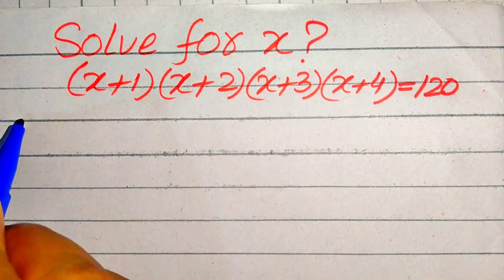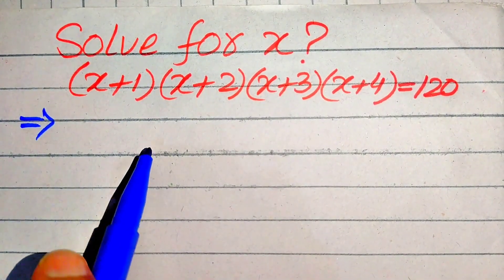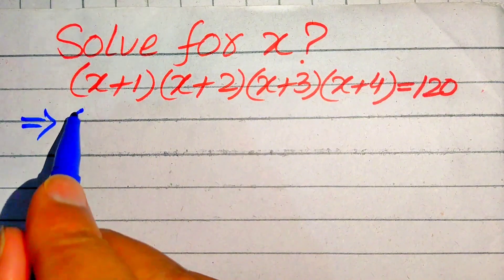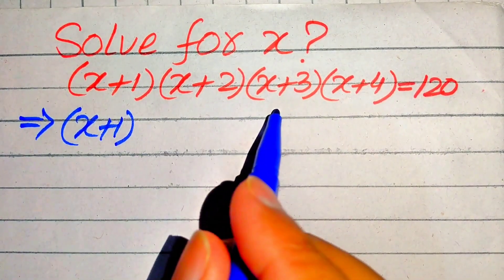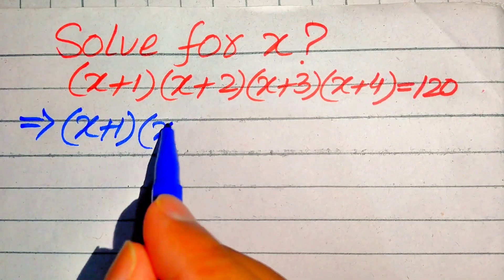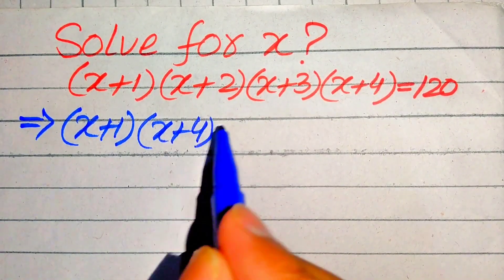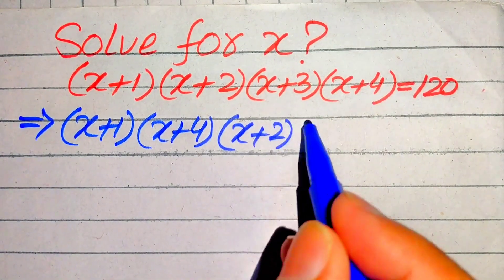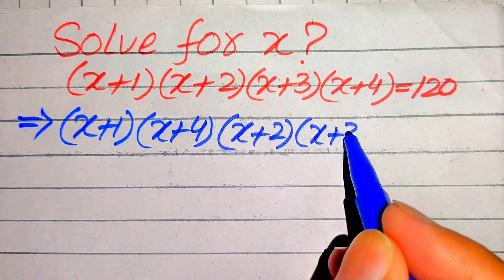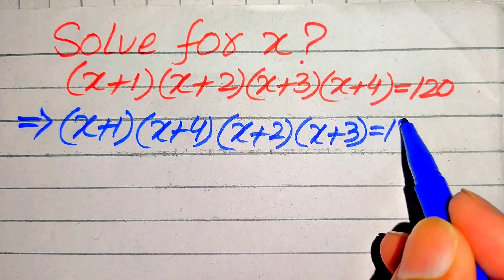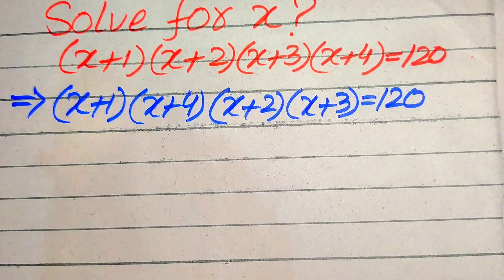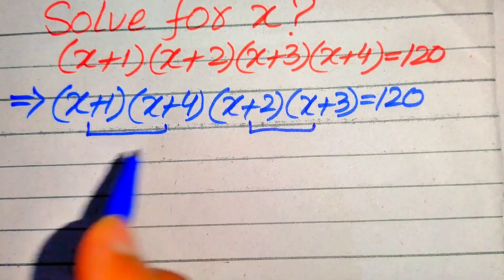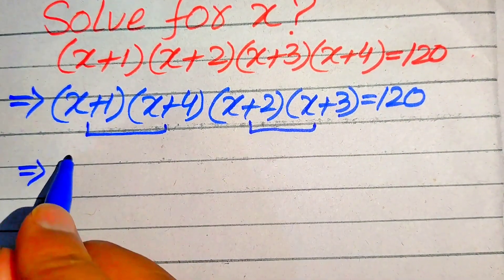The very first step we are going to do is rearrange the factors. It will be written as (x+1)(x+4) times (x+2)(x+3), and this whole equation equals 120. Now in the next step we need to multiply these two pairs.